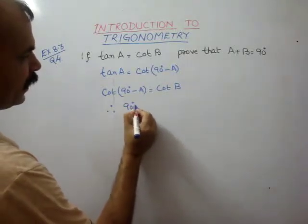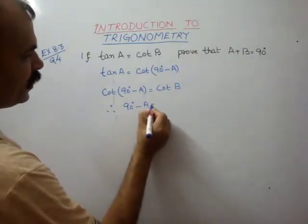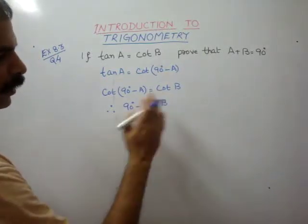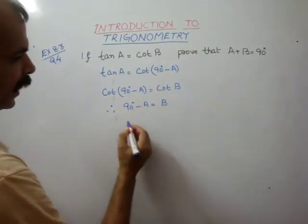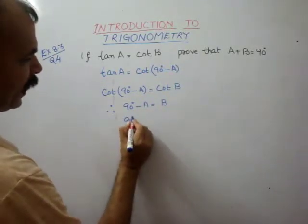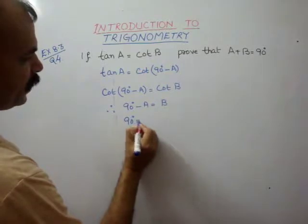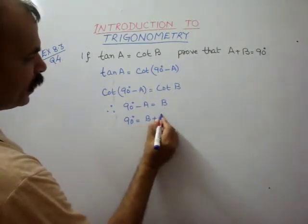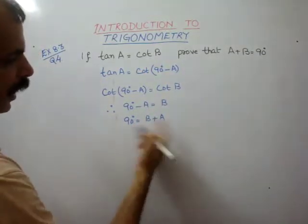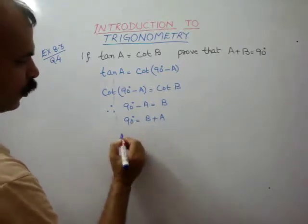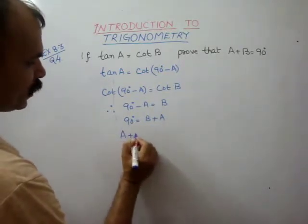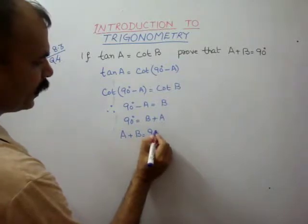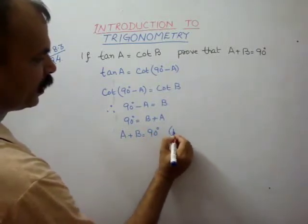90 degrees minus A is equal to B. Taking A to the right side, we get 90 degrees is equal to B plus A. So if we arrange this, A plus B is equal to 90 degrees.